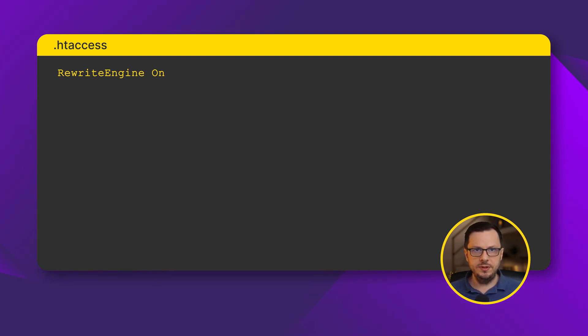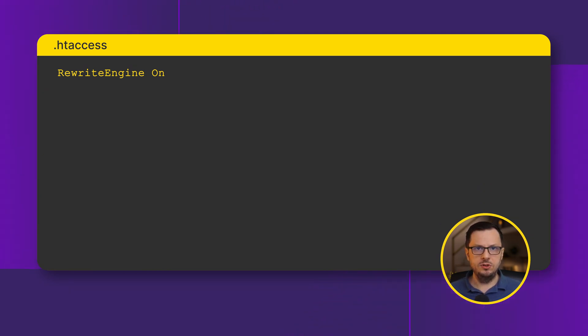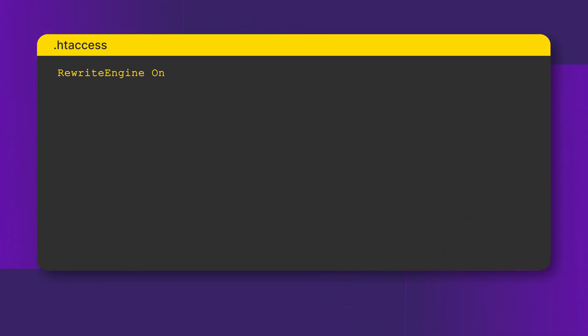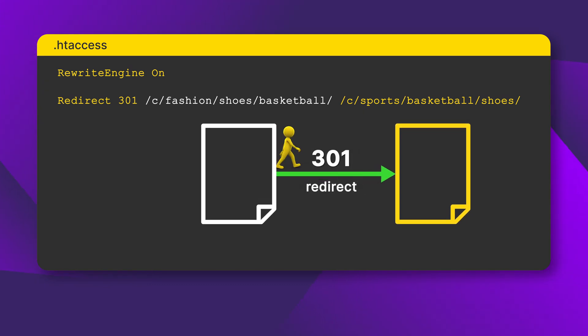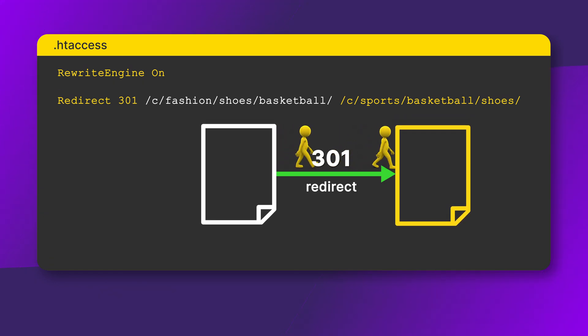Let's say that you move the category basketball shoes from the fashion category into the sports category. You want Google to know where they are located and also redirect users who bookmarked this category in their browser, so they don't get an error when visiting the bookmark. This line of code means anyone going to the old basketball shoes category URL within the fashion category will automatically go to the new URL with the sports category instead.